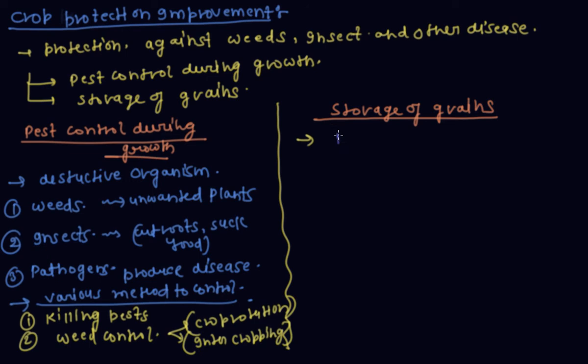Two types of problems occur or exist in the storage of grains: biotic problems and abiotic problems.